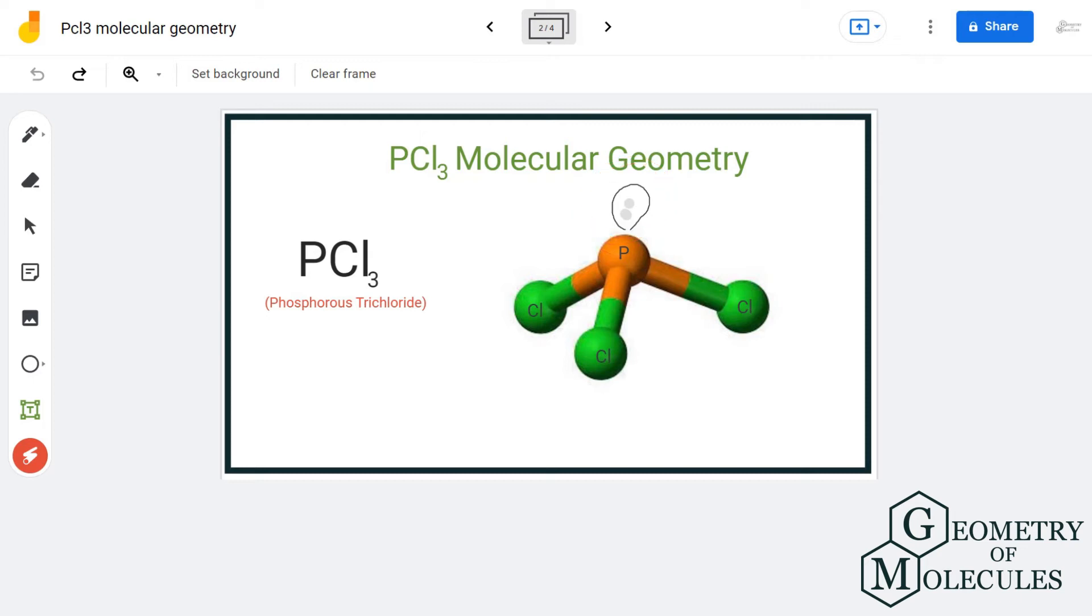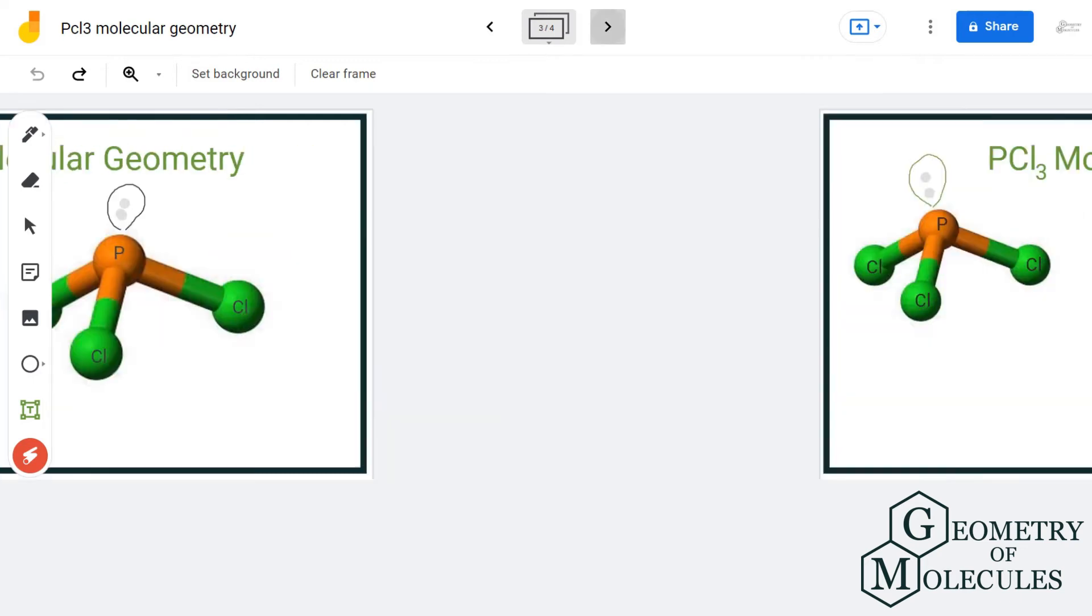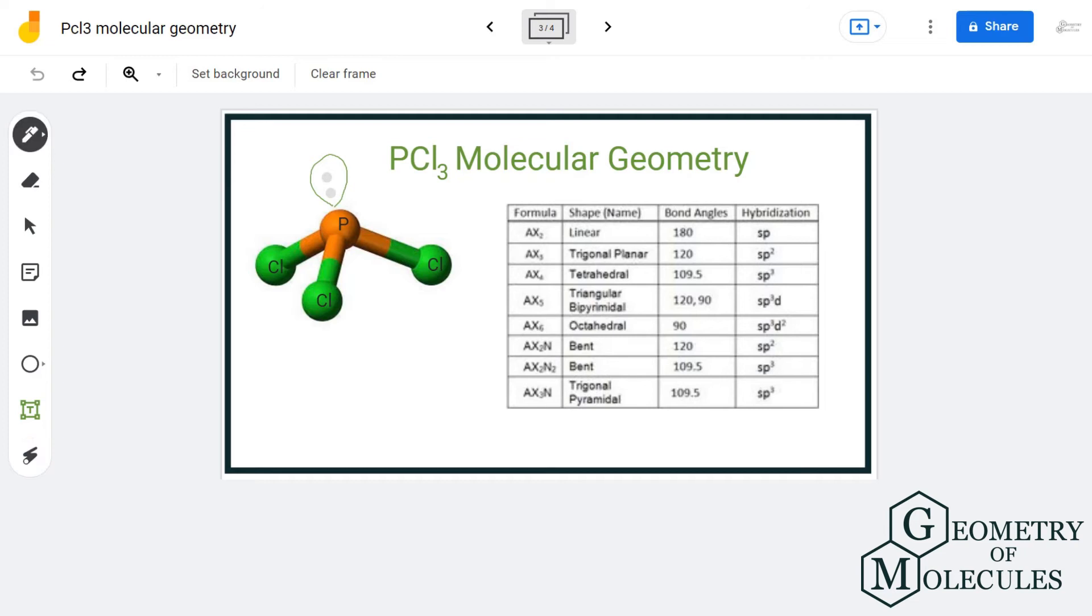Also, let us now use the AXN notation method to see if we are on the right track. Here, A stands for the central atom, X is the number of atoms forming bonds with the central atom, and N is the number of lone pairs of electrons present on the central atom.